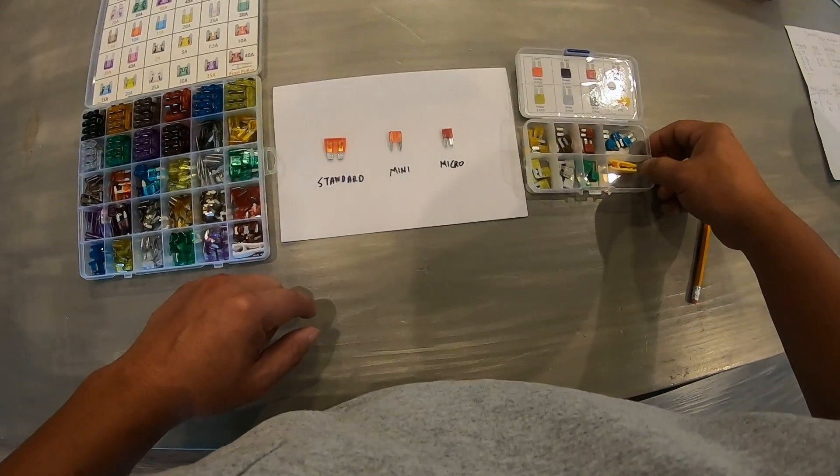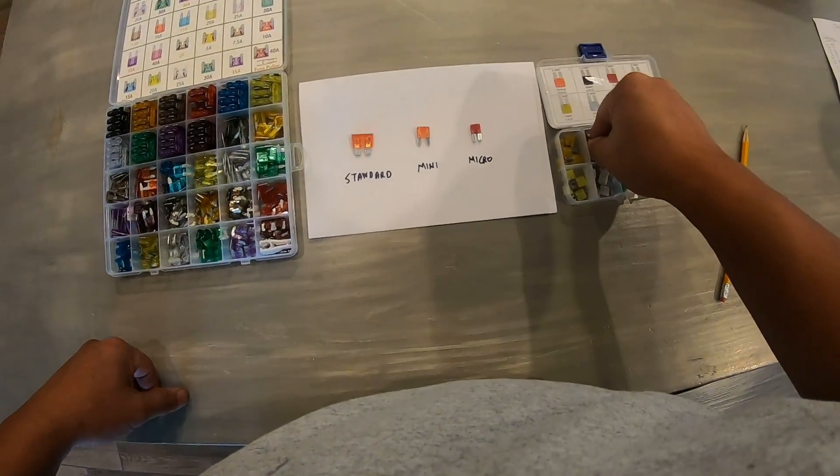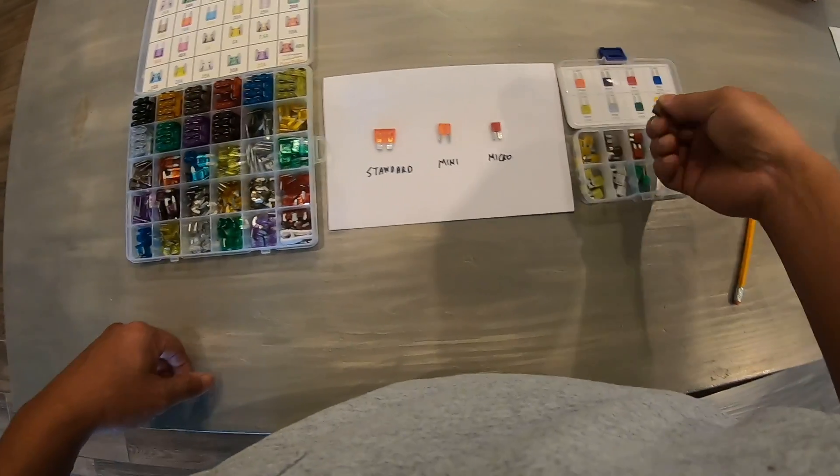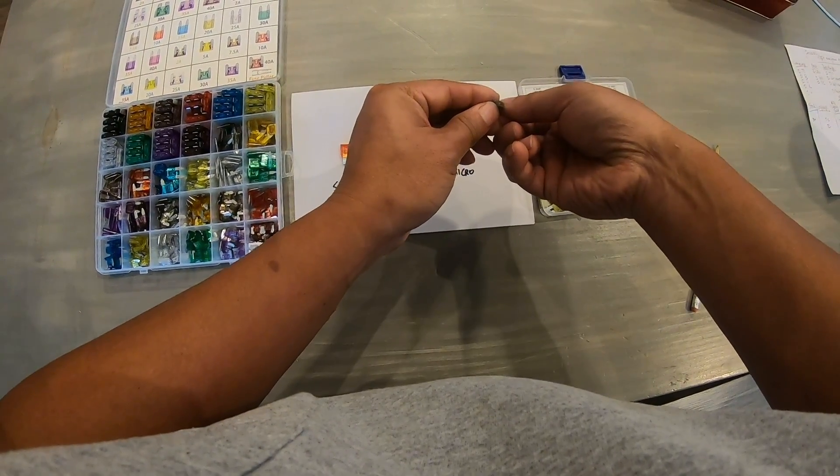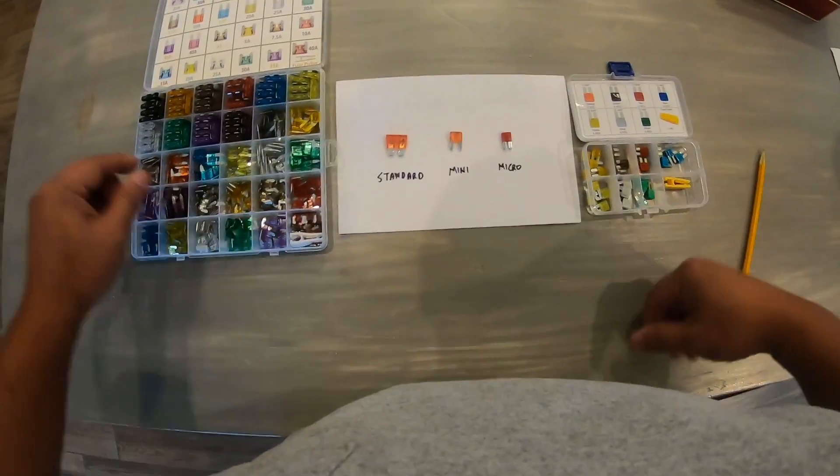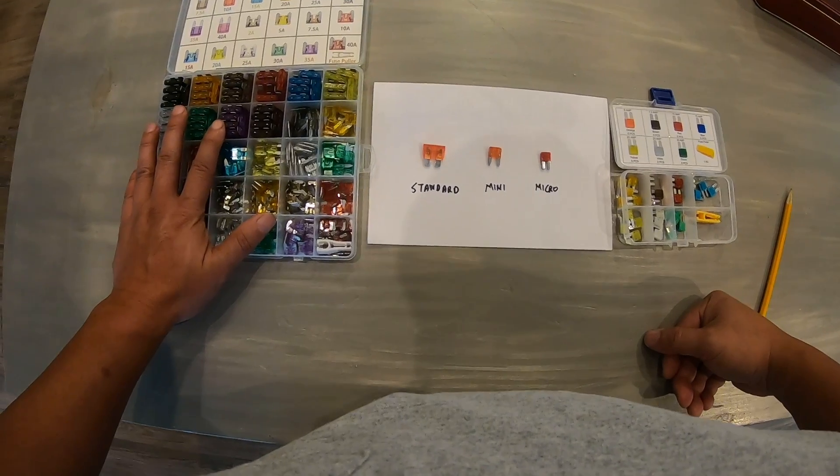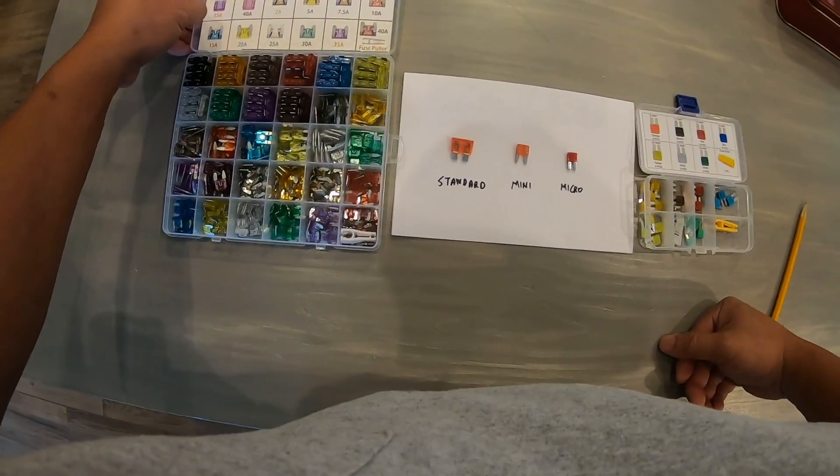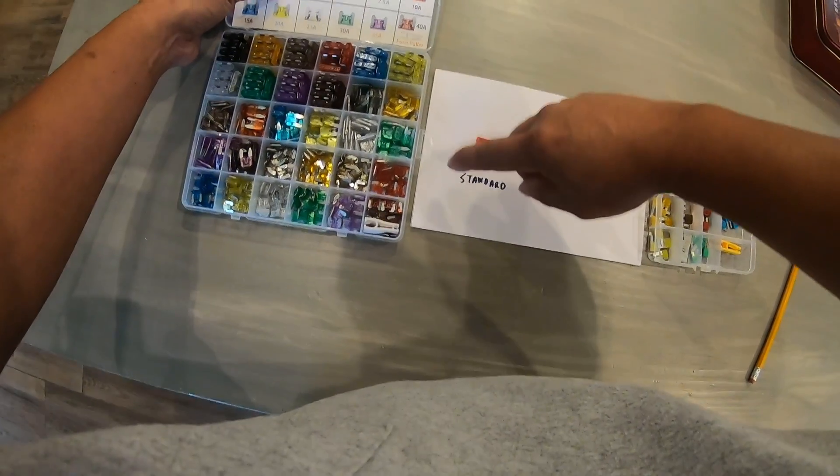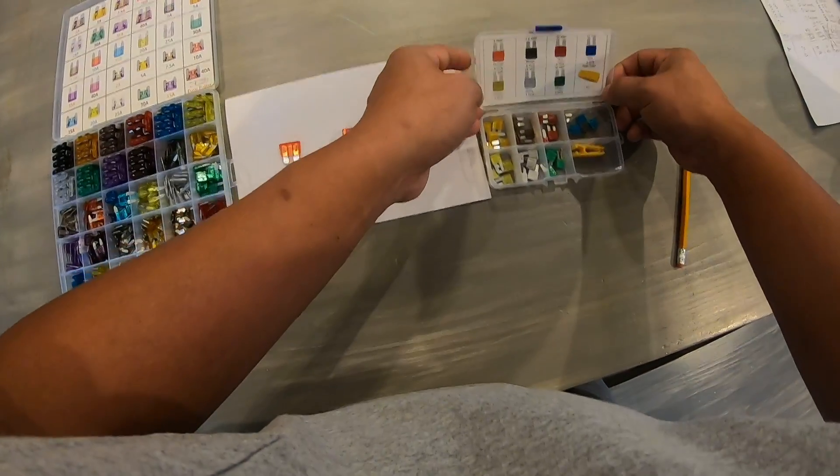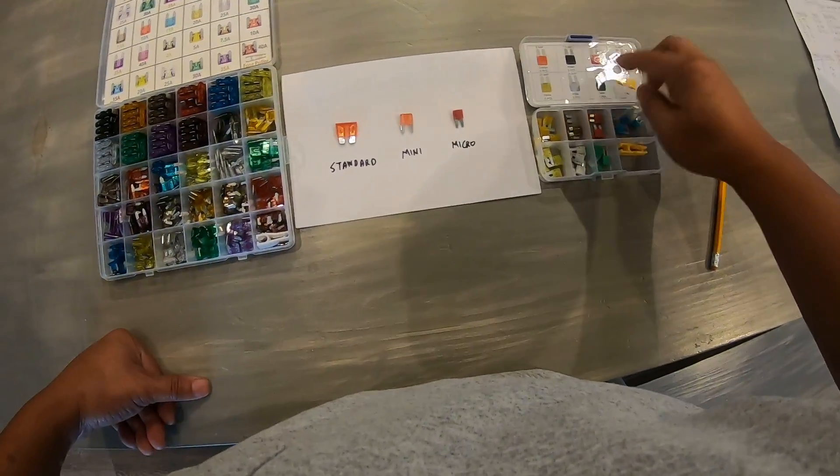Let me see here, so in my kit right here there's actually a purple one also. Usually purple means 35 amp. This is seven and a half amp. So the standard fuse and micro fuse goes up to 35 amp or actually 40 amp, and the micro fuse on my kit here from Amazon only goes up to 30 amp.